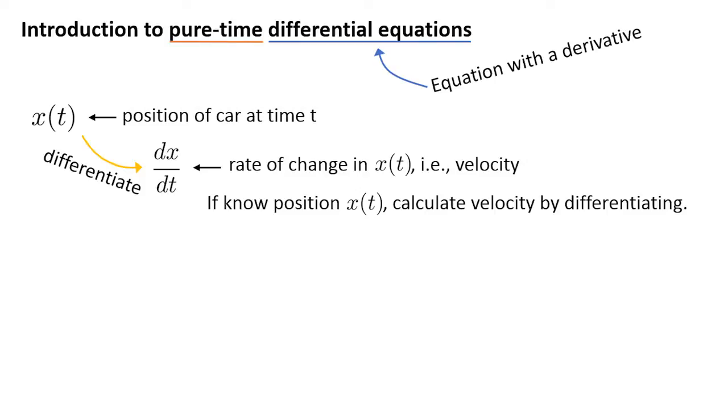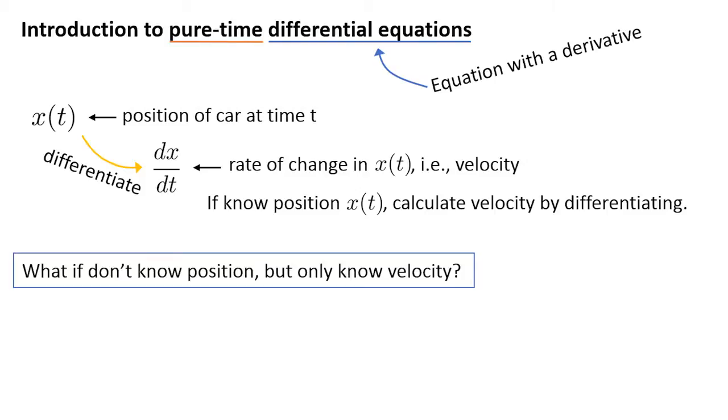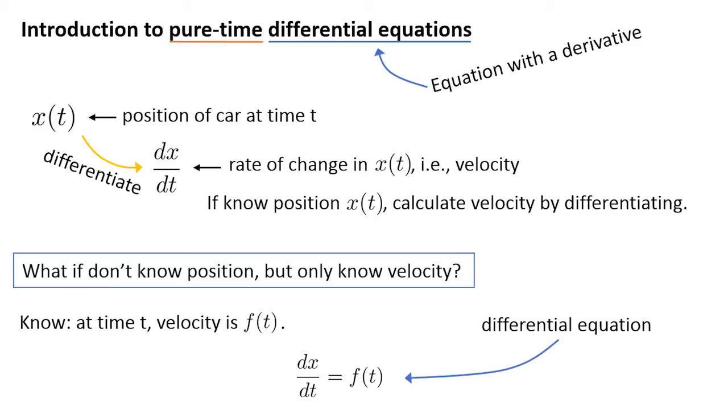But what if we didn't know the car's position, but we did know its velocity? Let's say we knew that at time t its velocity was f(t) for some function f. In other words, we knew that the derivative dx/dt at time t equals f(t). This information can be expressed as an equation involving the derivative: dx/dt equals f(t). We call this equation a differential equation because it is an equation involving a derivative. In particular, it's a pure-time differential equation because the right-hand side, f(t), is a function only of time t. It does not depend on position x.